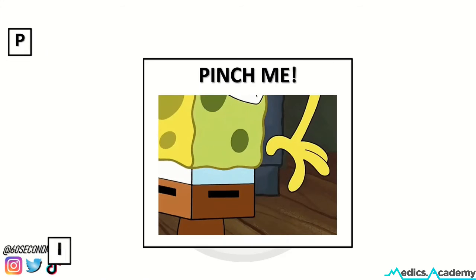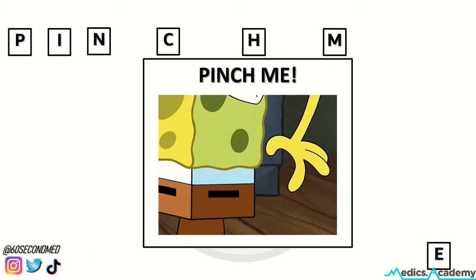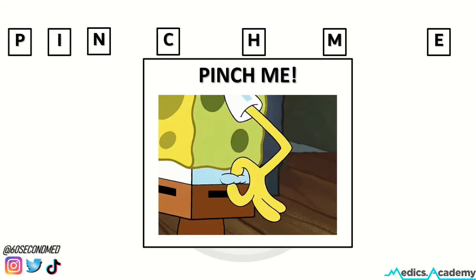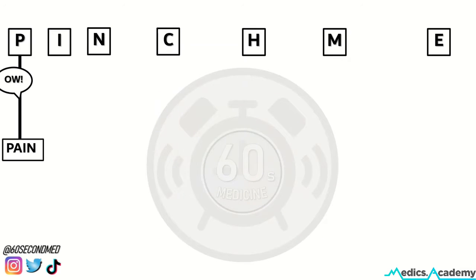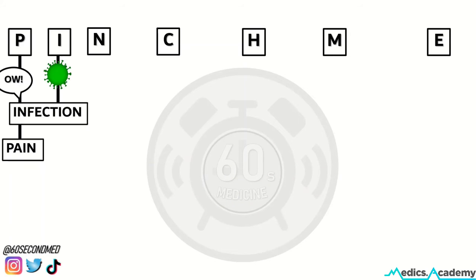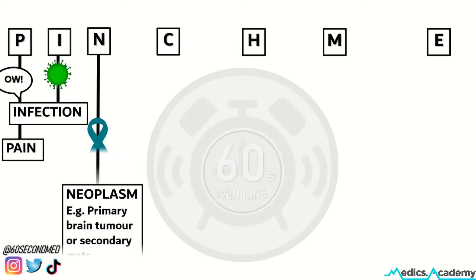The differentials for delirium can be summarized by the mnemonic PINCH ME. The P stands for pain — uncontrolled pain can be a cause of an acute delirious state. I stands for infection.